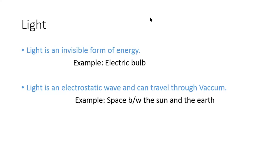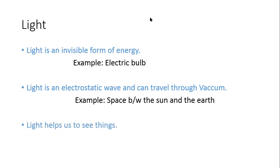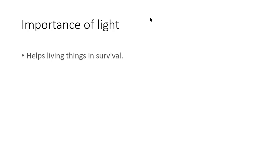For example, there is a vacuum between the sun and the earth, or in space. So in that vacuum also, light can travel. A very important point about light: light helps us to see things. If there were no light, then we would not be able to see the things around us. Now let's see the importance of light.